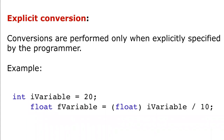But we can also convert this variable explicitly. Explicit casting is a type of conversion which is specified by the programmer. We can see the example — we have a variable of type integer and we are converting it explicitly into a floating point number.